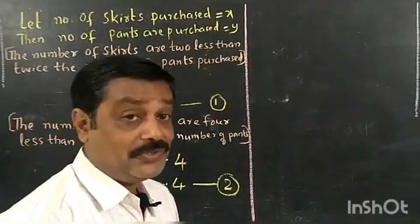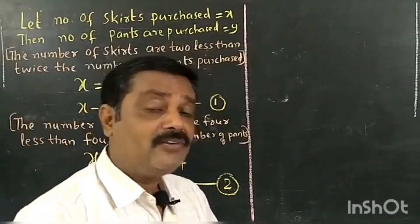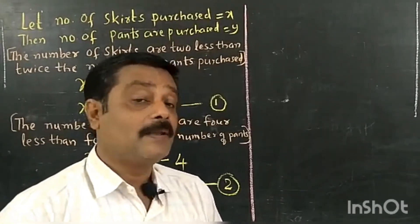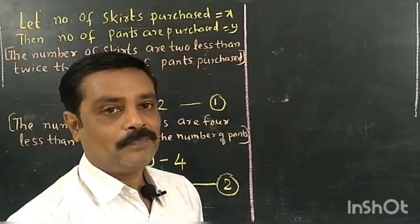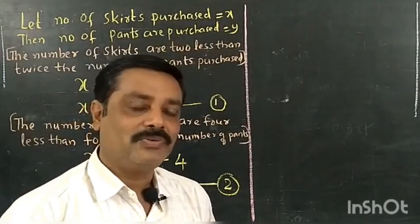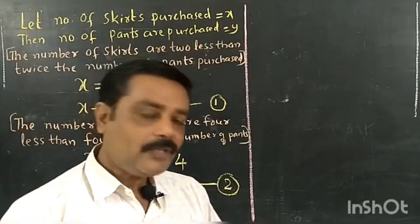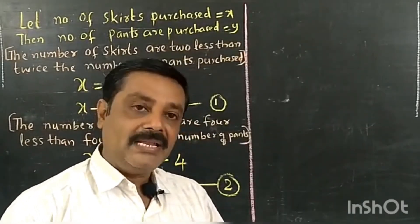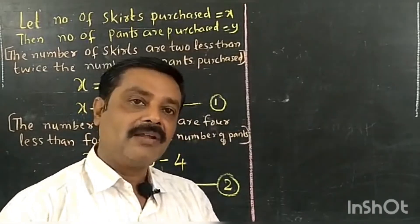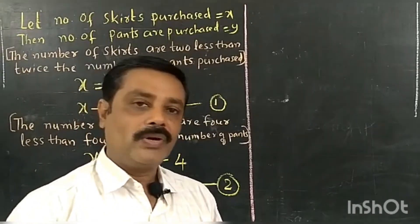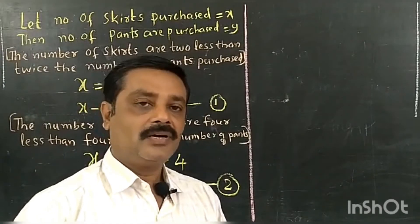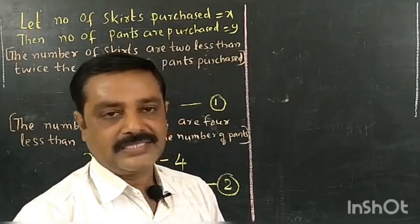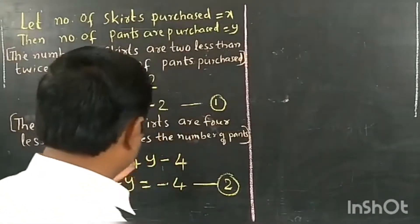Now, what is our duty? We need to find X and Y — the number of skirts and number of pants. We have three methods: graphical method, elimination method, and substitution method. You may follow any one of these methods to find X and Y.